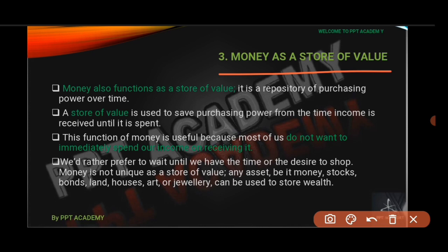Money also functions as a store of value. It is a repository of purchasing power over time. A store of value is used to save purchasing power from the time income is received until it is spent. The function of money as a store of value is useful because most of us do not want to immediately spend our income when we receive it.